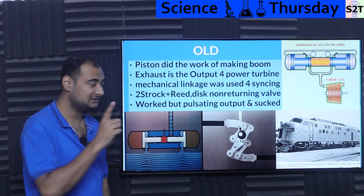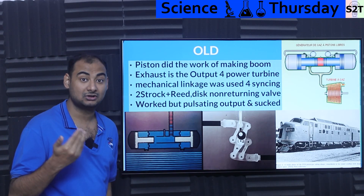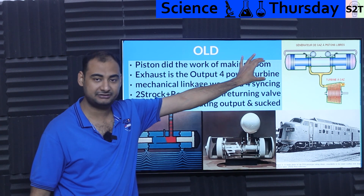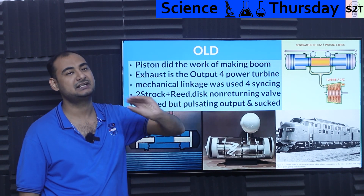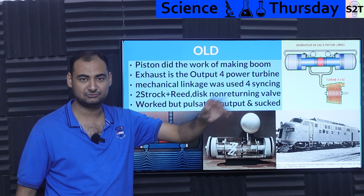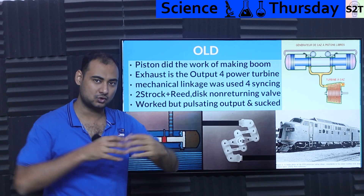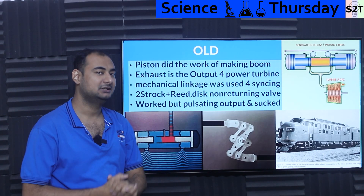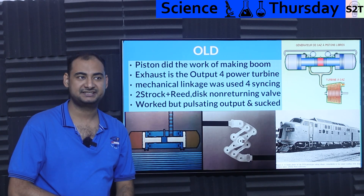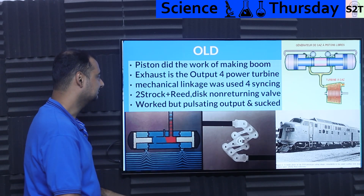The exhaust spins the turbine, and that does your work. In this design, the free piston is classified as a gas generator — nothing more. It takes liquid fuel and air and gives you hot exhaust gas. It's basically a super high-fancy flamethrower.